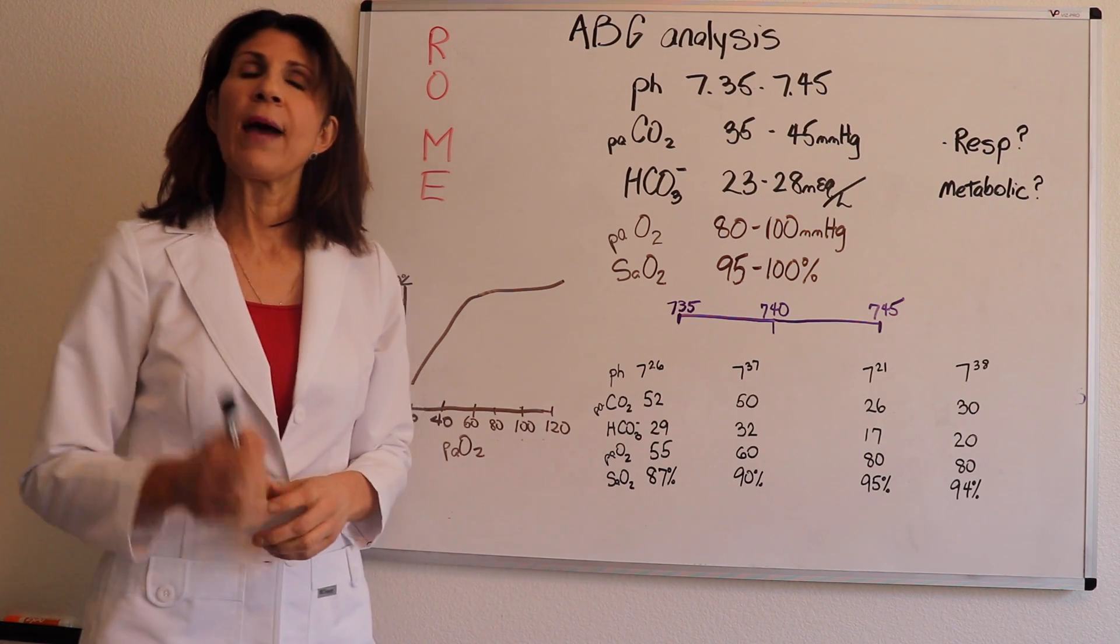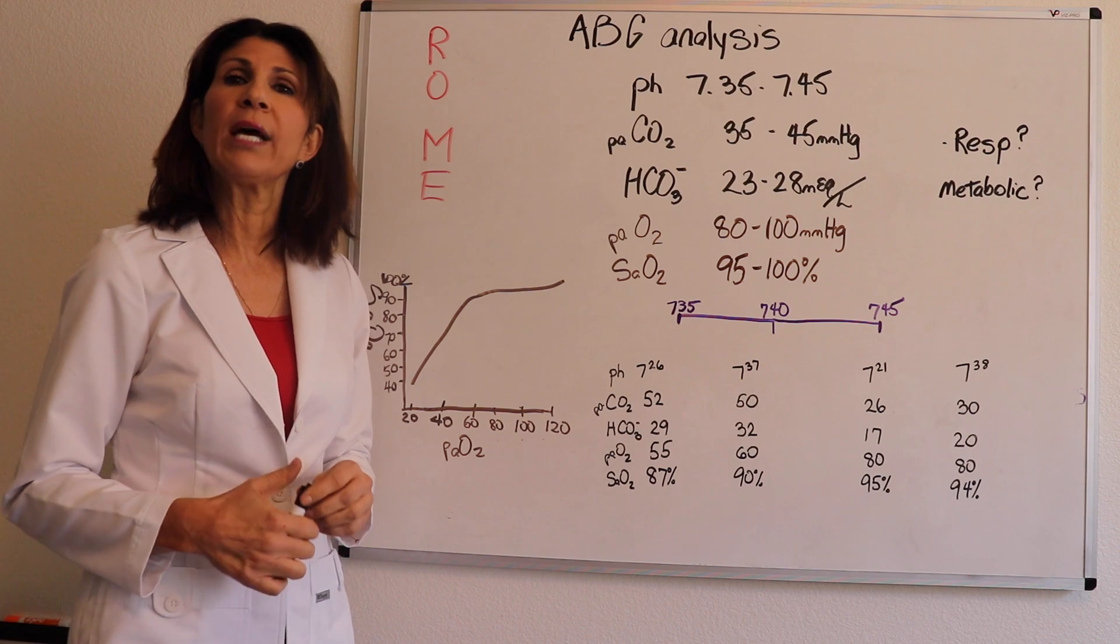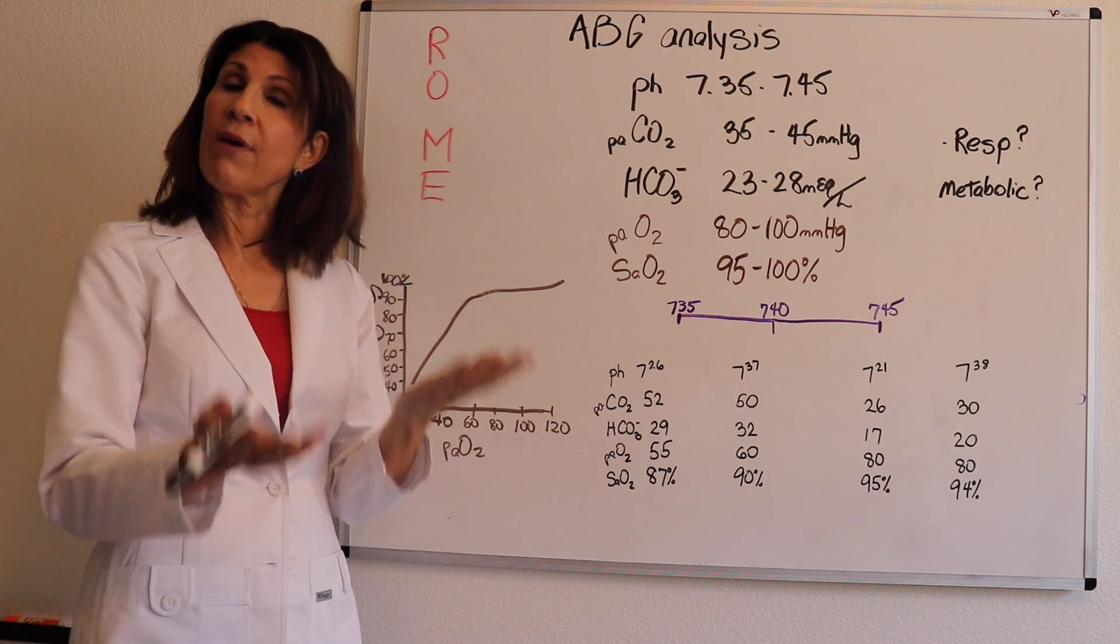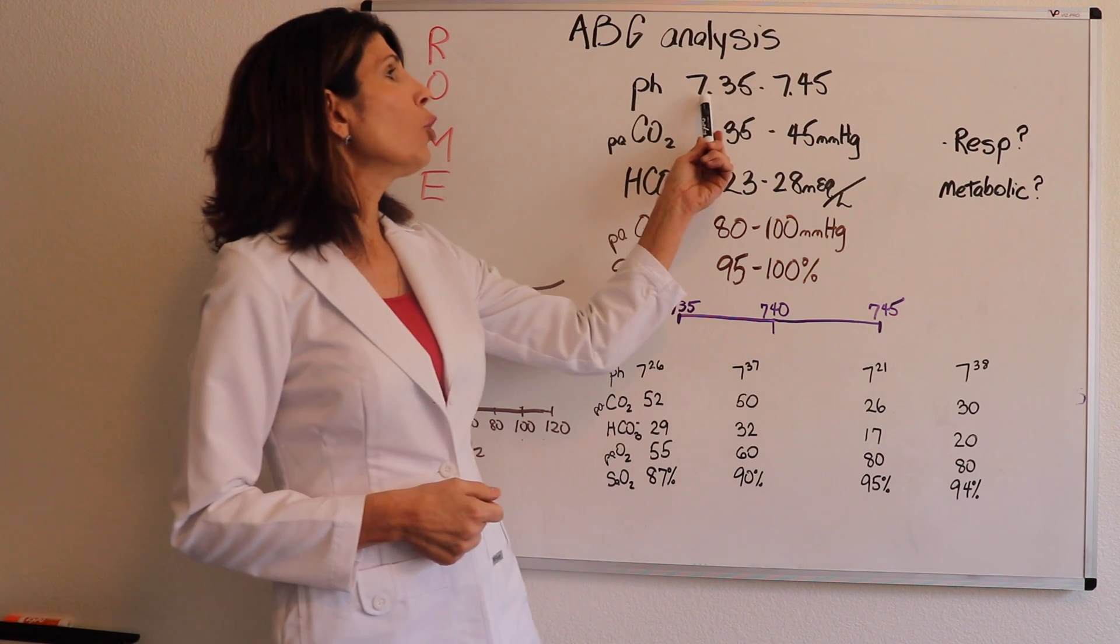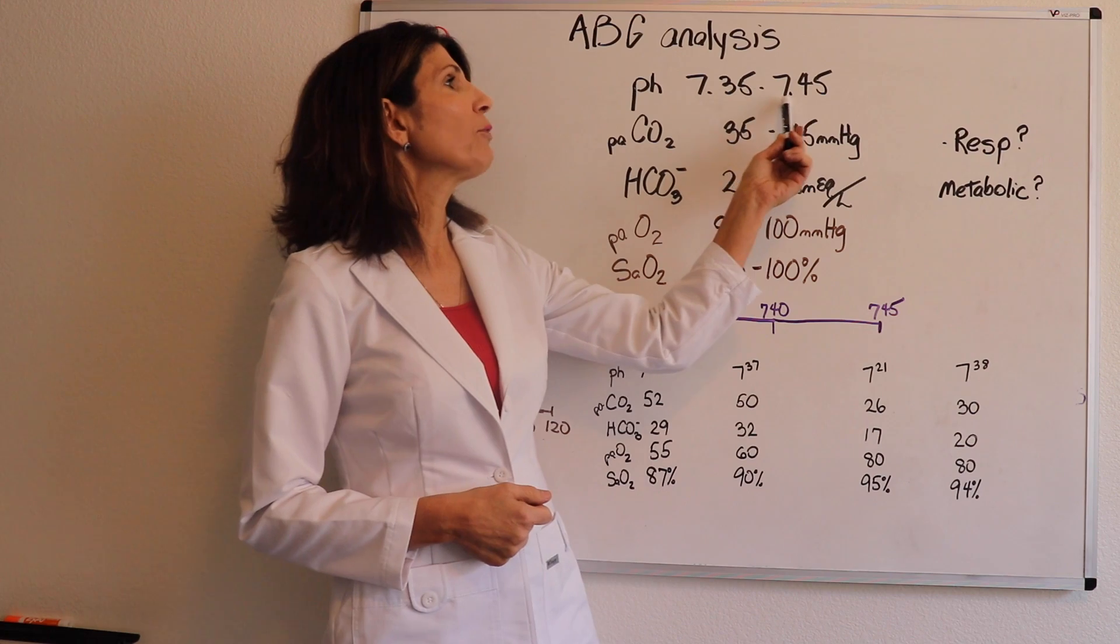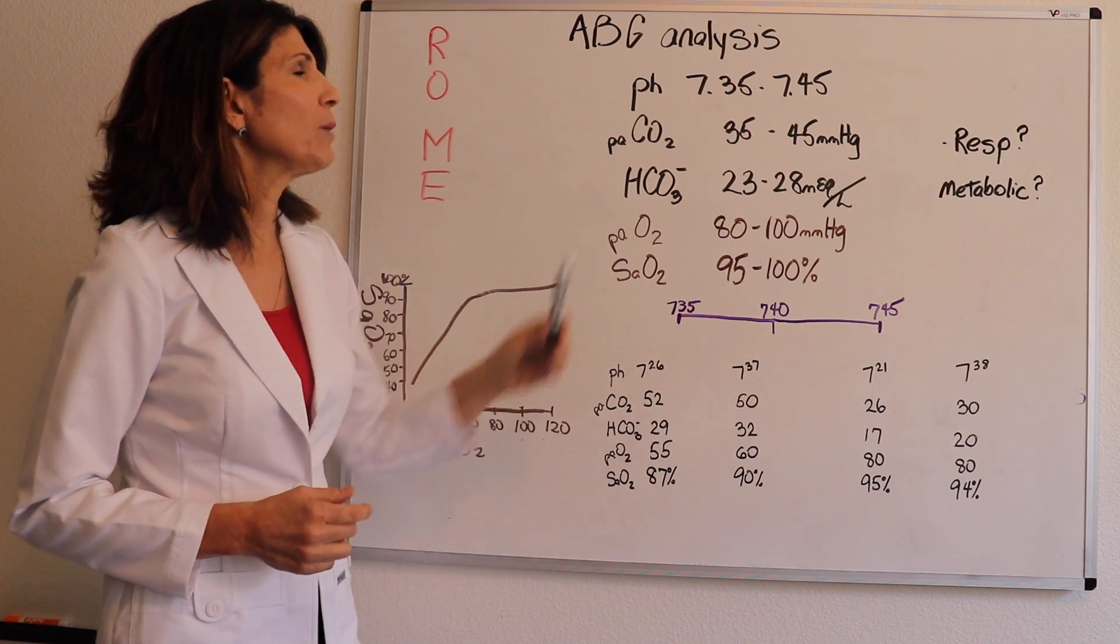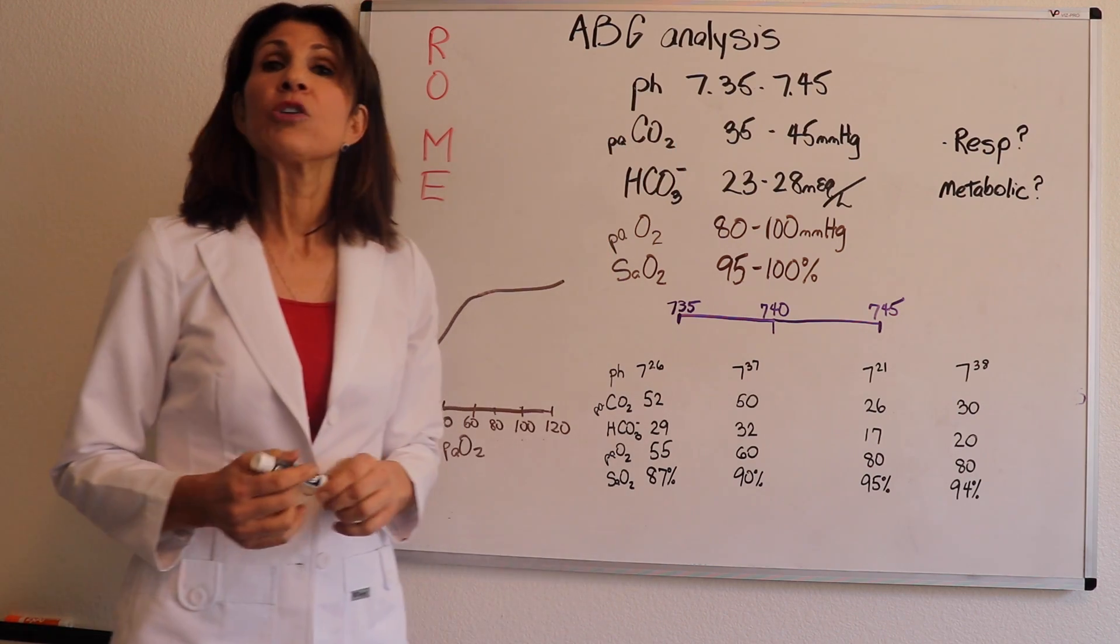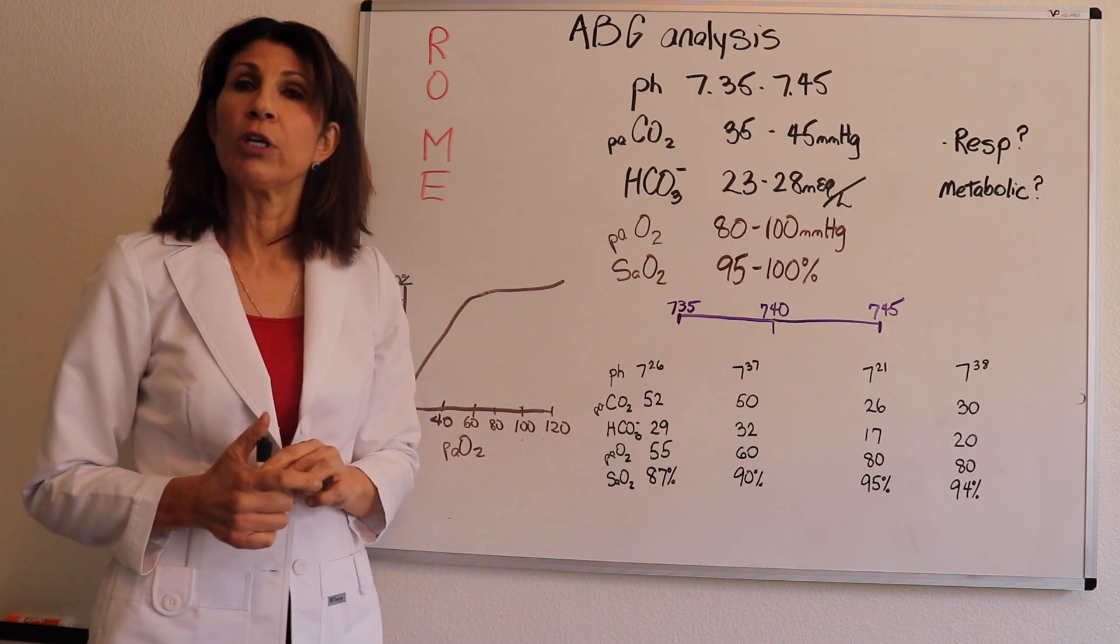pH. Well, what is that? First of all, it's the go-to. When you're approaching an arterial blood gas, that's the first thing you want to look at is, do we have a balance of acids and bases in the system? So normal pH is 7.35 to 7.45. So you need to commit that to memory.